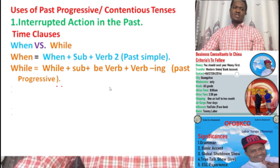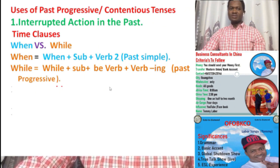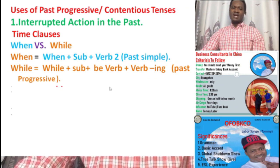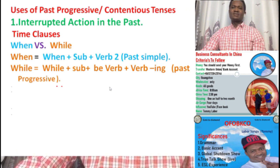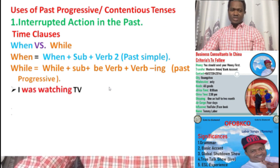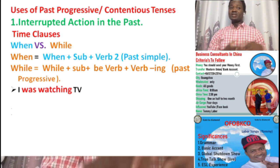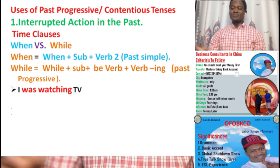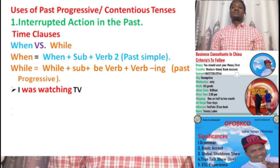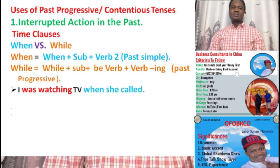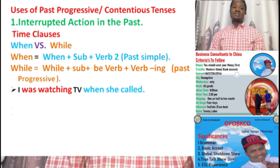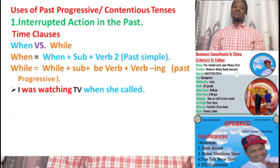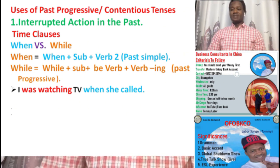Let's do the examples. Let's see how the action is interrupted — the action that is going on in the past. First example: 'I was watching TV' — there is an action that was going on in the past. The action that interrupts is 'when she called.' So 'when she called' is a time clause in the past simple. It's the one that interrupts the action that was going on in the past.